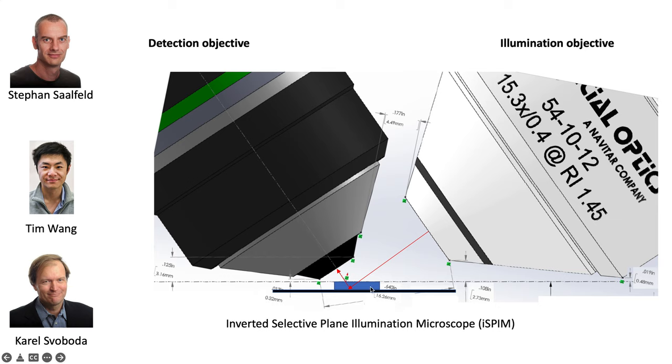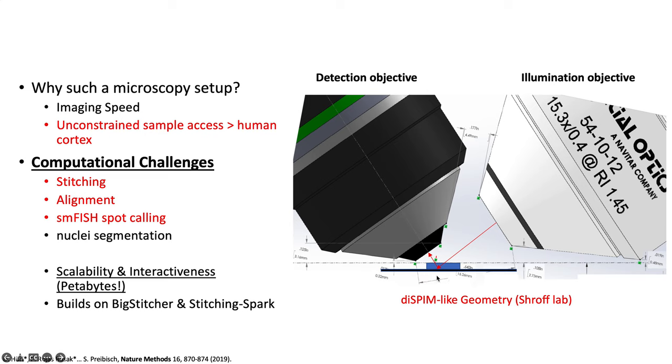I want to give you an example because we started working on one project here together with Jeff Saalfeld, who's also a computer scientist on the reconstruction side, and we worked with Carol Swoboda, who is meanwhile at the Allen Institute, and Tim Wang. They build such a microscope that can scan large areas with light sheet microscopy. Why do we need such a microscope setup compared to the classical Stelzer ultra microscope? First, you have unconstrained sample access. If you slice your sample, it can be infinite because you move the stage down and you can scan data that is as big as you want. It has a huge advantage for very large samples. The computational challenges are very similar to the classical mesoSPIM setup: stitching, alignment, and then downstream you want to find FISH spots and segment nuclei.